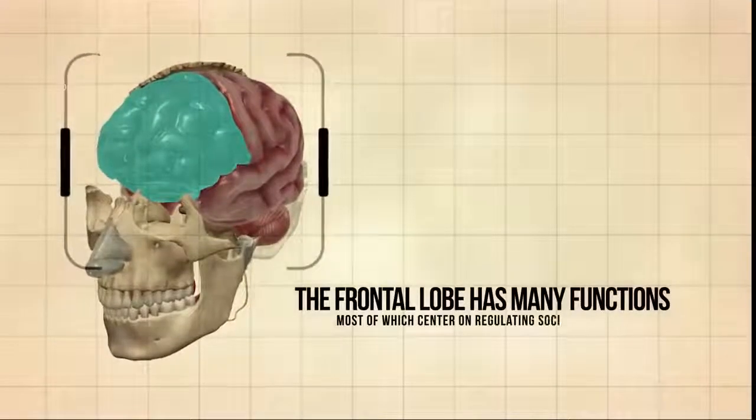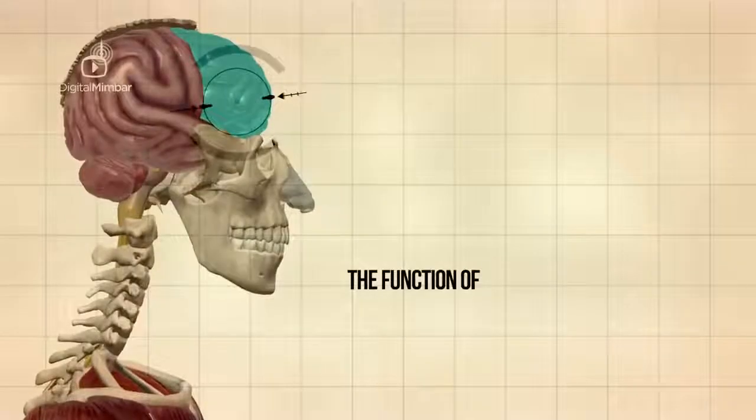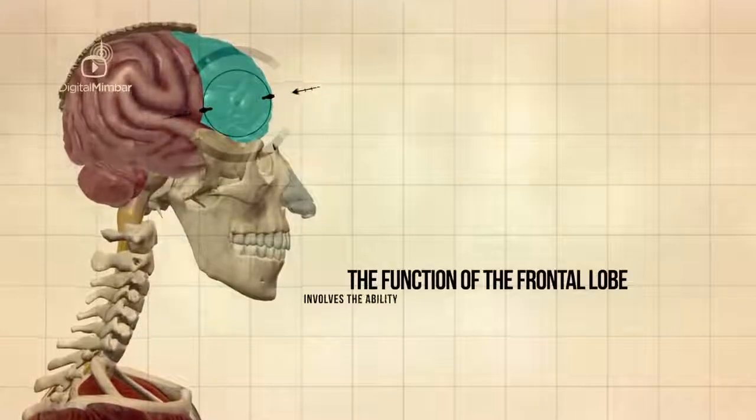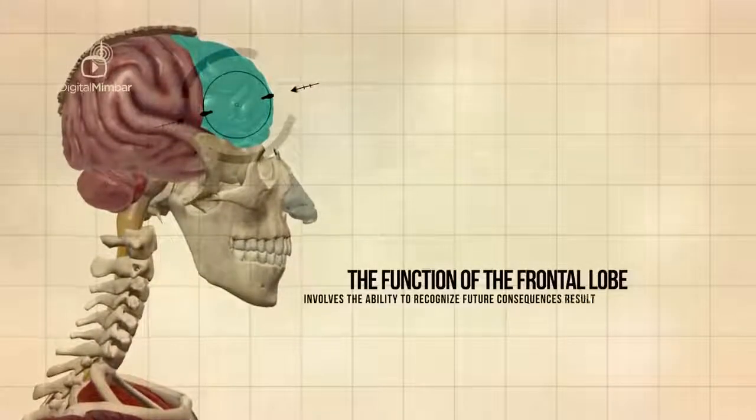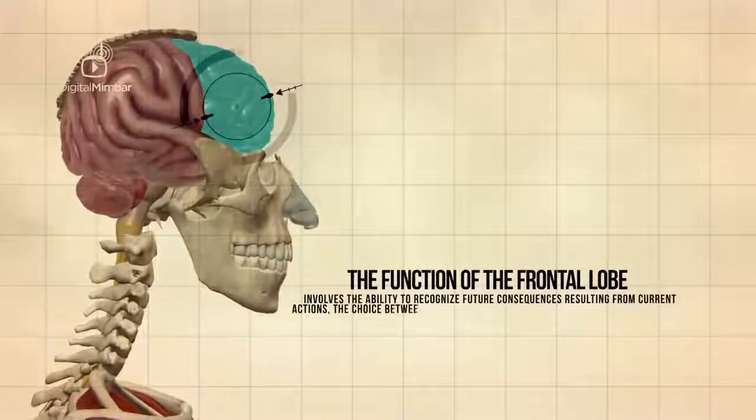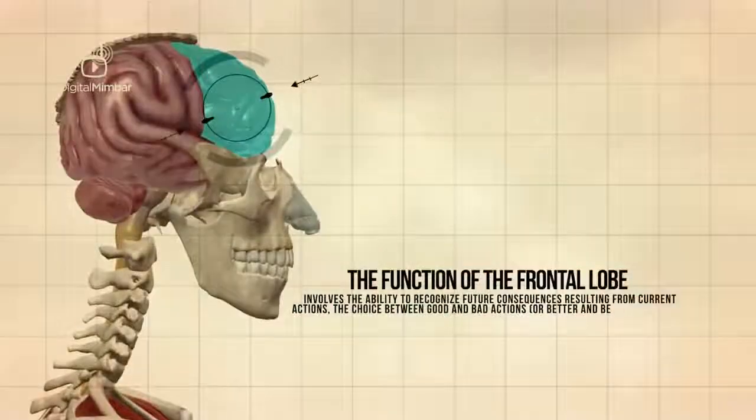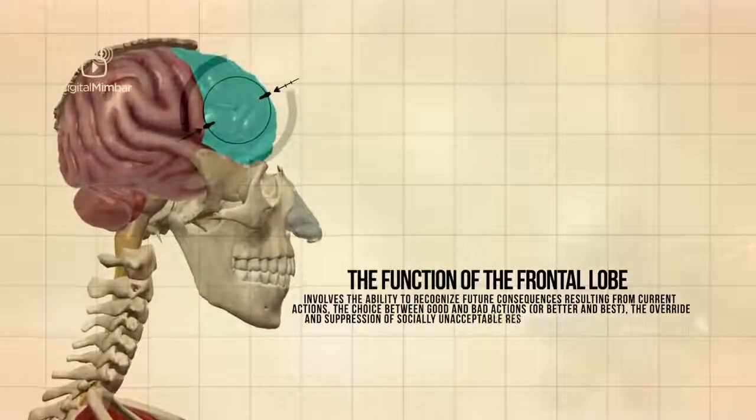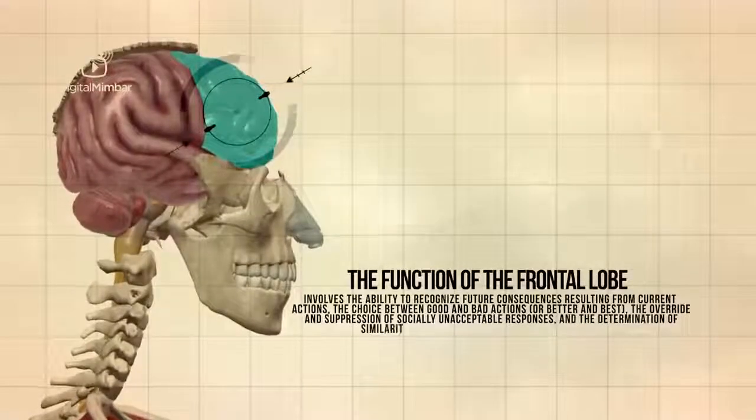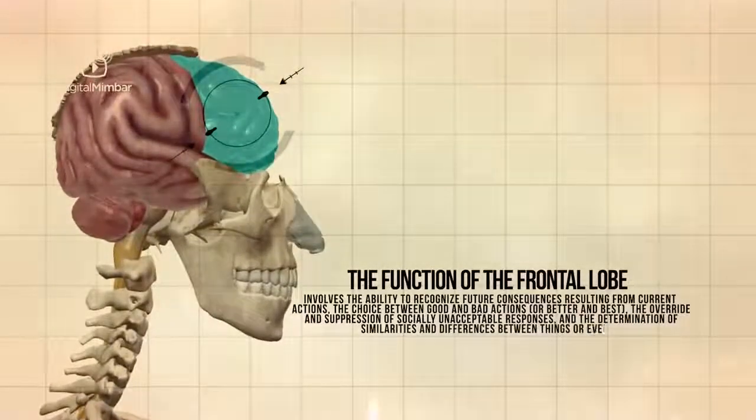The frontal lobe has many functions, most of which center on regulating social behavior. The function of the frontal lobe involves the ability to recognize future consequences resulting from current actions, the choice between good and bad actions or better and best, the override and suppression of socially unacceptable responses, and the determination of similarities and differences between things or events.